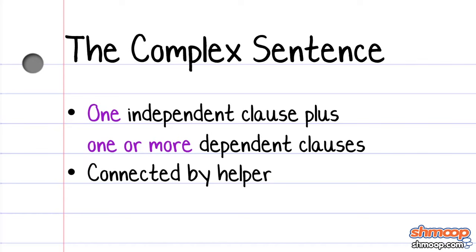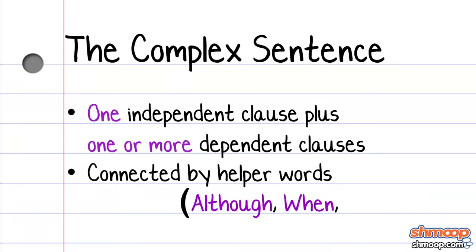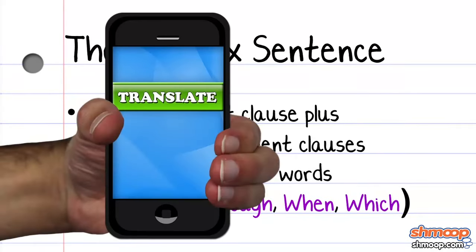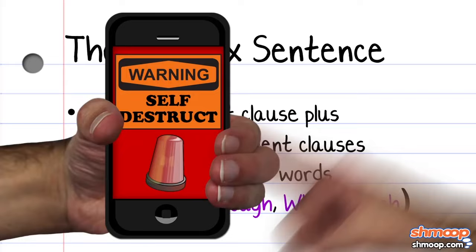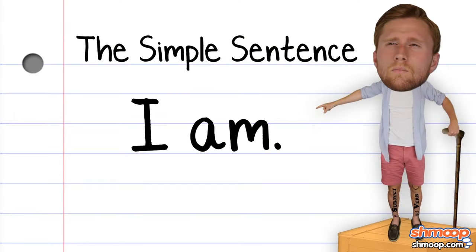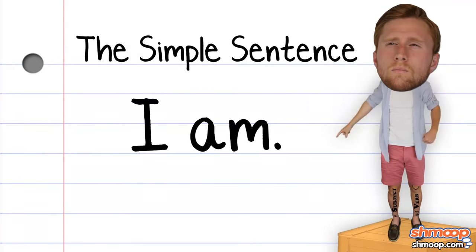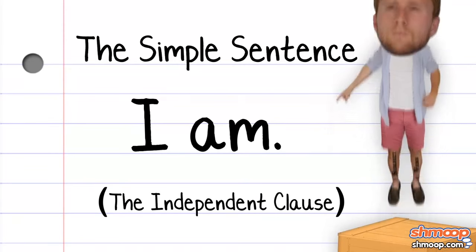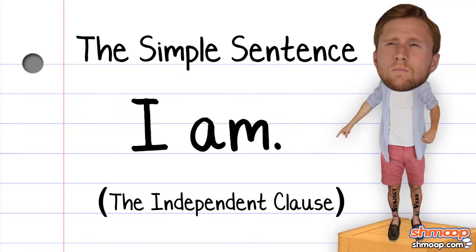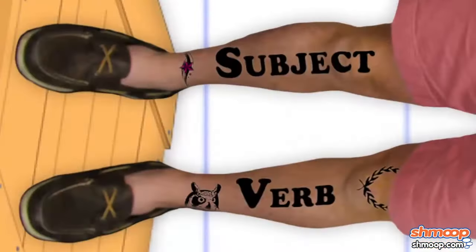So they're connected via a helper word, such as although, when, or which. Here's the simplest of simple sentences. A simple sentence is solid — it stands on its own. That's why it's also known as an independent clause. Like our friend over here, it stands on two legs: a subject and a verb.